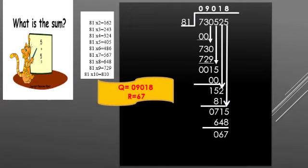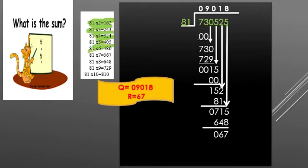Children, now let us take one more example. 7,30,525 is divided by 81. Here 81 is given as the divisor and 7,30,525 is given as the dividend. The first step: list out all the multiples of 81. Here are the multiples — 81 into 2 is 162, 81 into 3 is 243, 81 into 4 is 324, 81 into 5 is 405, 81 into 6 is 486. In this way, list multiples up to 10.